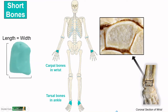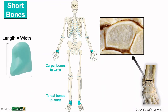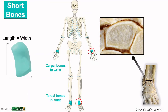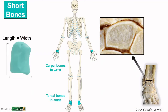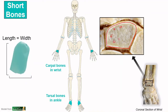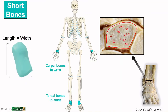Short bones are square-shaped, generally quite small, and found in our wrists and ankles. In cross-section, you can see a nice thin layer of compact bone surrounding the more porous spongy bone deep to it.